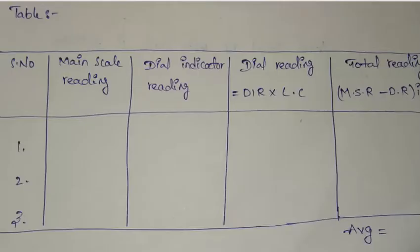Here is the observation table. Serial number, main scale reading, dial indicator reading, dial reading, total reading. Dial reading means dial indicator reading into least count. We know that least count is 0.01 mm. And total reading is main scale reading minus dial reading in mm. And the average gives the final answer.